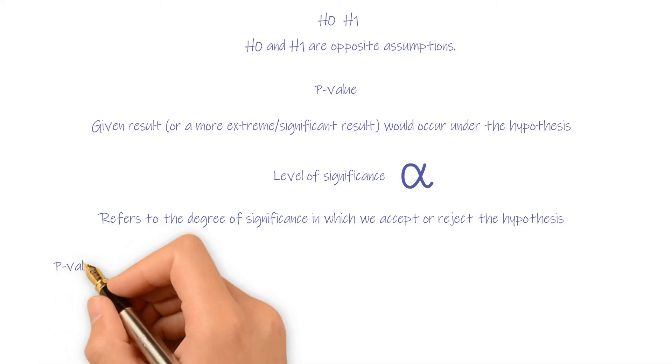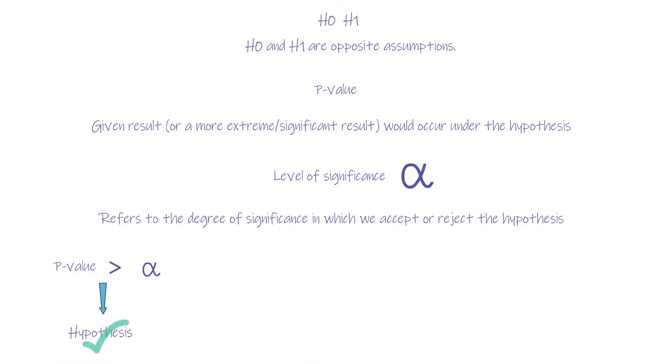Then, compare the p-value to the pre-chosen alpha value. If p-value greater than alpha, then fail to reject hypothesis. If p-value less than alpha, reject the hypothesis.